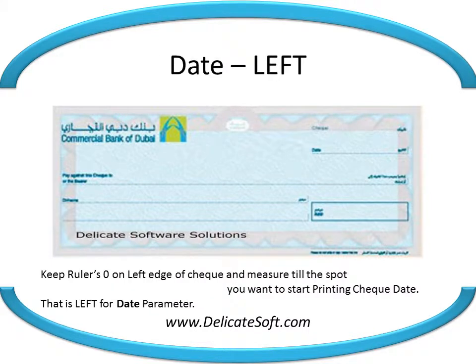Keep the ruler's zero on the top edge of the check and measure till the line of the date. That is the top for the date parameter.